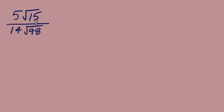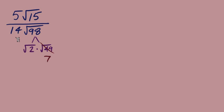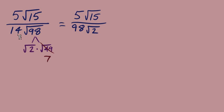Can we simplify any of the radicals individually? For radical 15, the factors are just 1, 3, and 5 — no simplifying there. But 98 breaks down into radical 2 times radical 49, and 49 is a perfect square that simplifies to 7. That 7 multiplies with the 14 already outside, making the denominator 98. Radical 2 stays inside, and 5 radical 15 in the numerator stays as is.